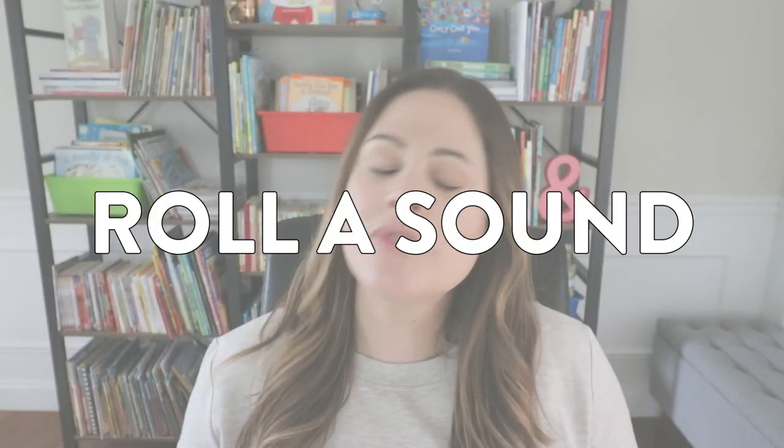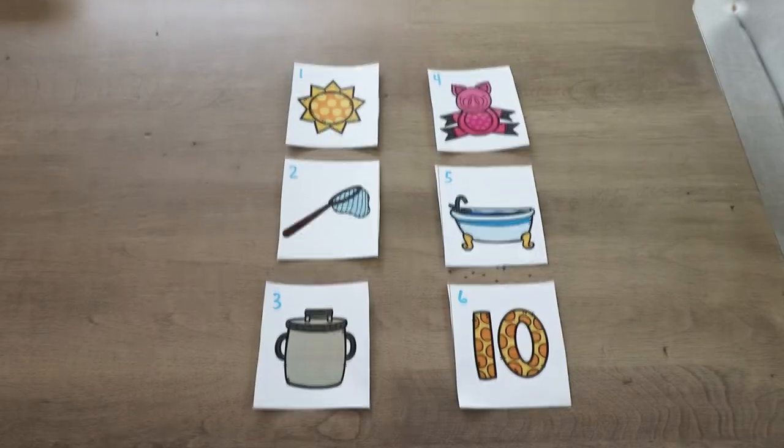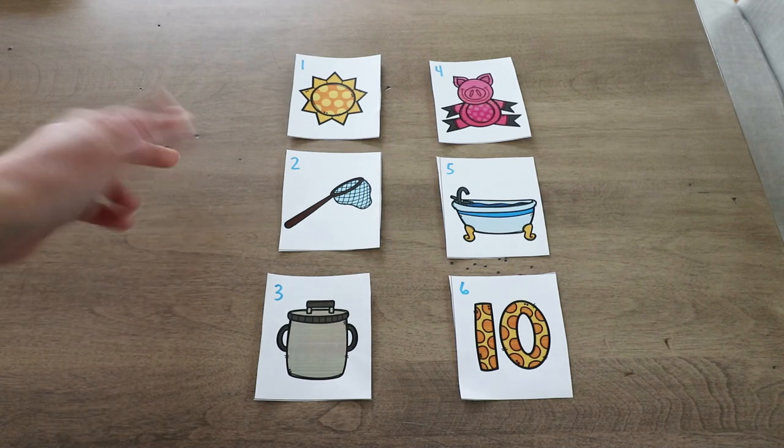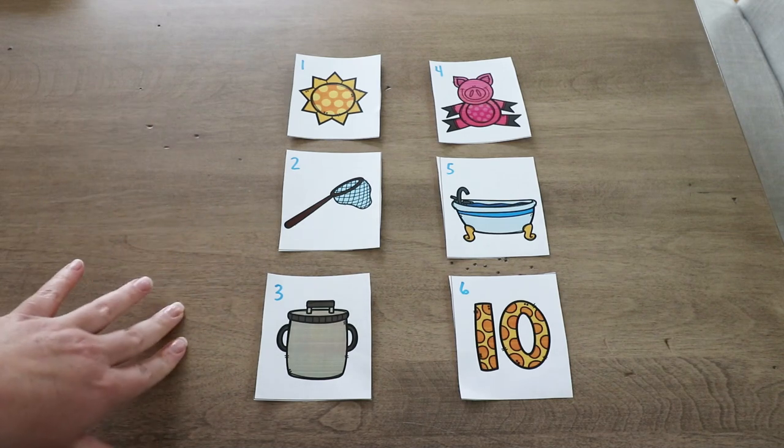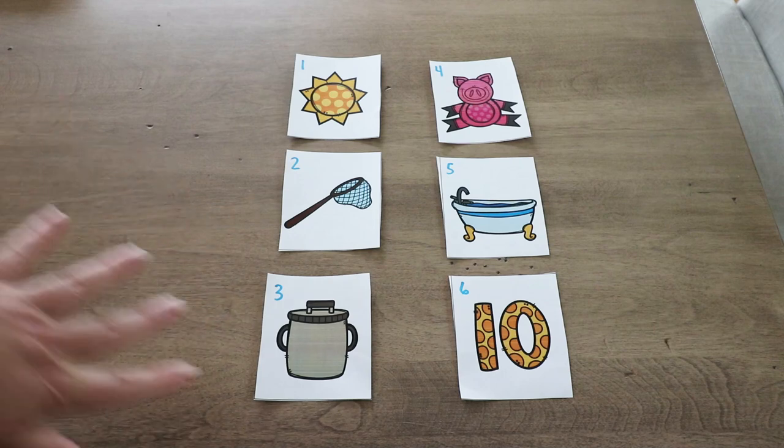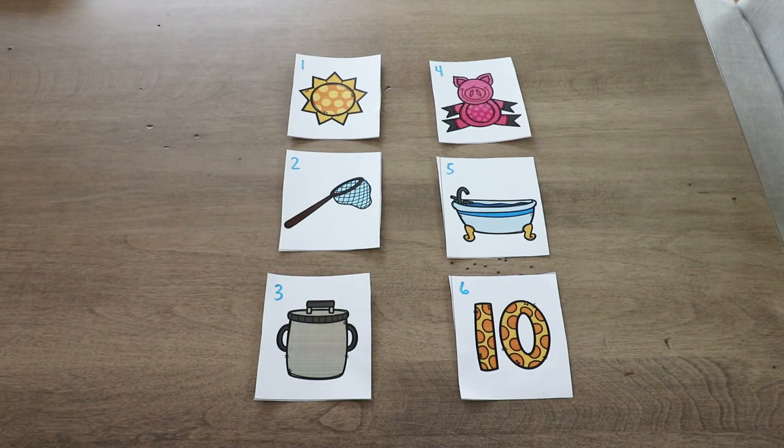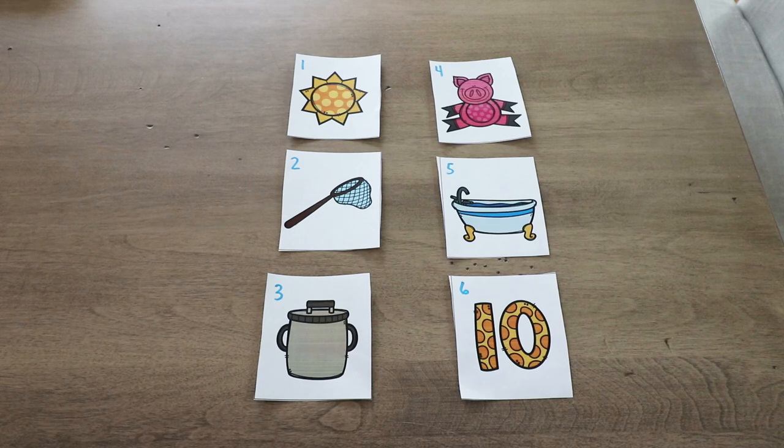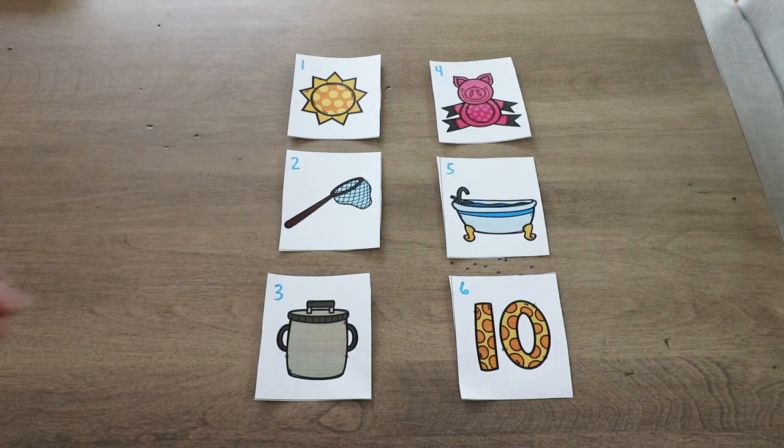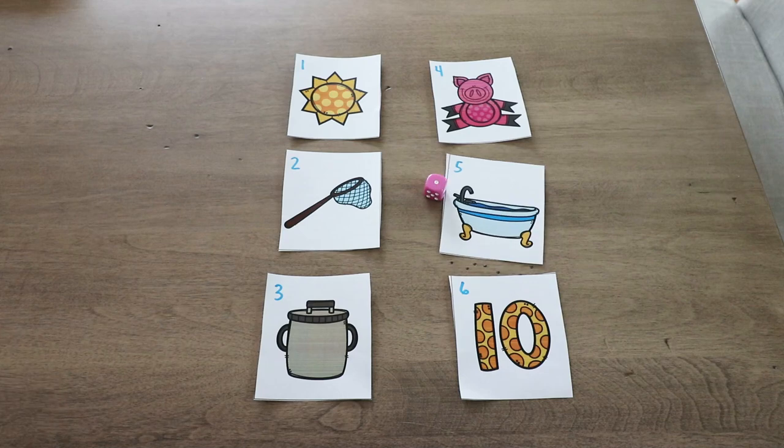The last literacy activity I'm going to share today is called roll a sound. Now I like this one for phonemic awareness because students are having to isolate the either beginning, the middle, or the end phoneme, depending on how you play. And it's just a fun way for them to go ahead and do that and then also identify the grapheme that matches the phoneme. This one too you can play a few different ways. So for roll a sound, it is as simple as this where you'll just print out six different images. Here I have some CVC clip art images that I already own. You could find any six images from the internet or maybe that you have anywhere and print them out and put numbers one through six on them.